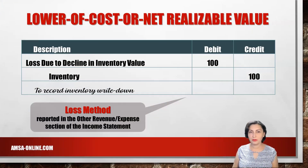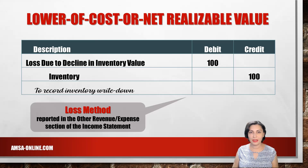If the amount is material, the account called loss due to decline in inventory value is debited. Note that losses are recorded in the other revenue or expense section of the income statement.